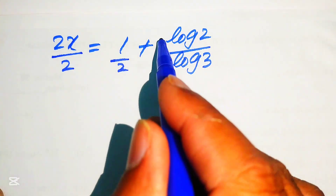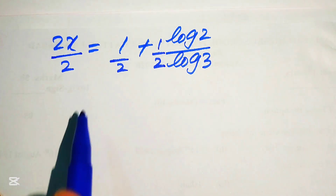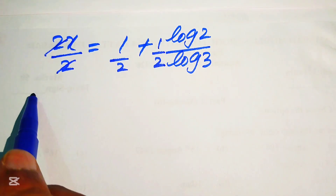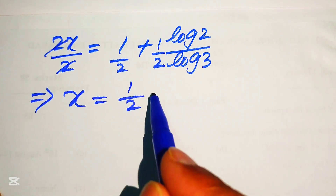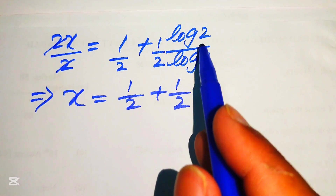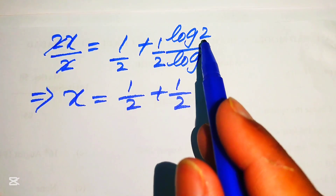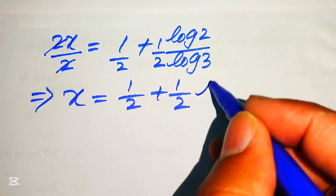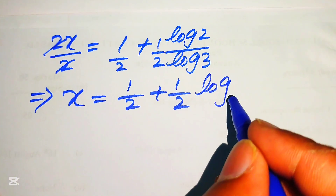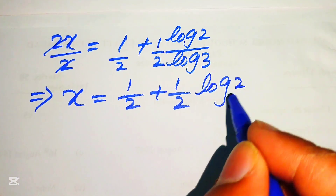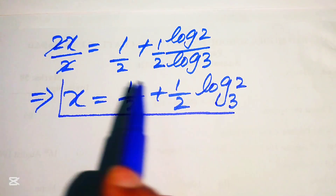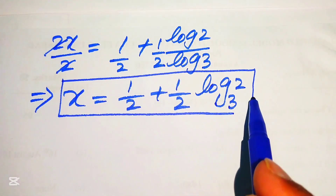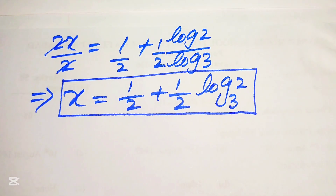We divide each term by 2. The twos cancel and we get x equals 1 over 2 plus 1 over 2 times log 2 over log 3. We can apply another property of log and write log 2 over log 3 as log base 3 of 2. So x equals 1/2 plus (1/2) log base 3 of 2. This is the final value of x. Now we need to verify this value.